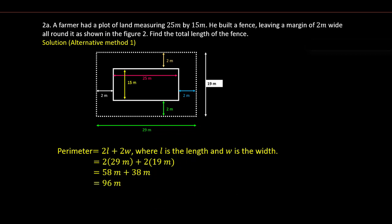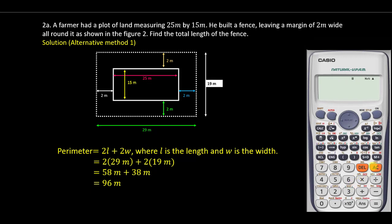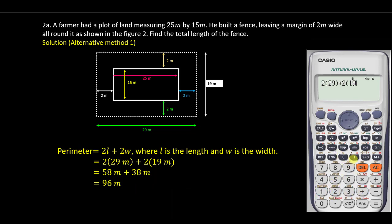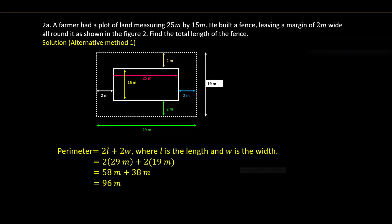We can also verify the calculation by substituting directly into the formula: 2(29) + 2(19) = 96. The answer is confirmed, so we can conclude that the total length of the fence is equal to 96 meters.